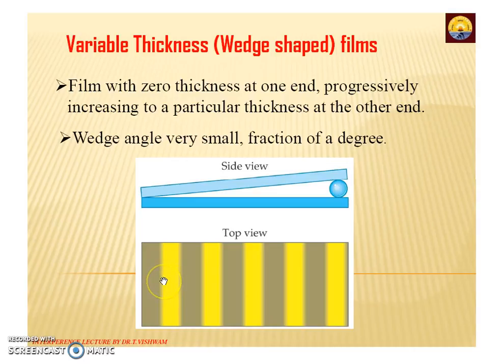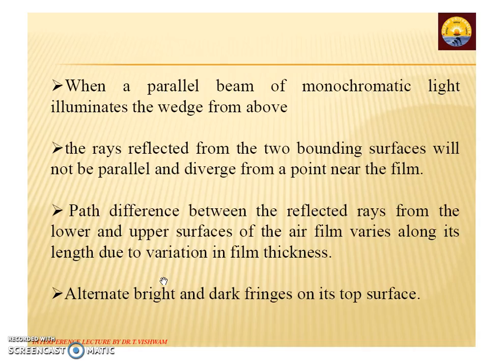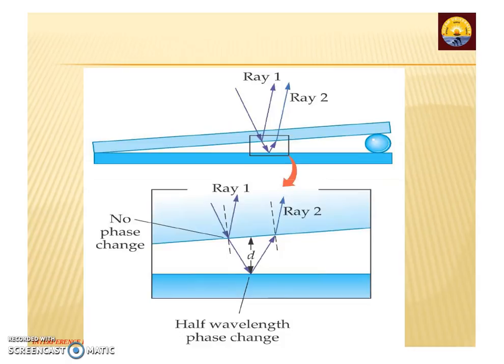We are getting straight and parallel fringes. When a parallel beam of monochromatic light illuminates the wedge shape from above, the rays reflected from the two boundary surfaces are nearly parallel and diverge from a point near the film. The path difference between the reflected rays from the lower and upper surface of the air film varies along the length due to the variation in the film thickness. So we get alternate bright and dark fringes on the top surface, and these fringes are said to be localized fringes.